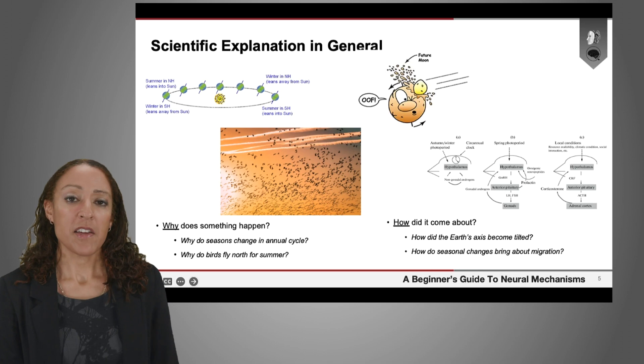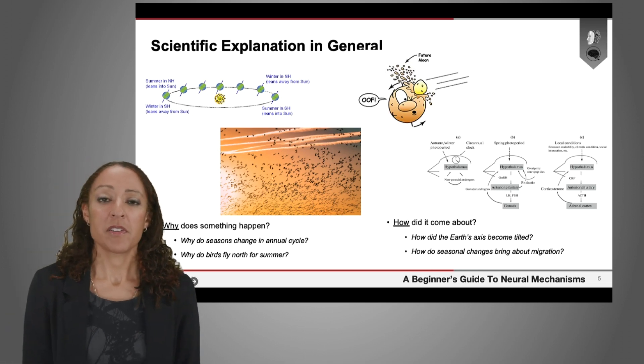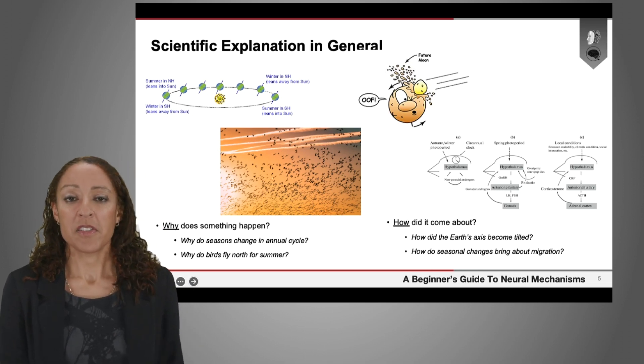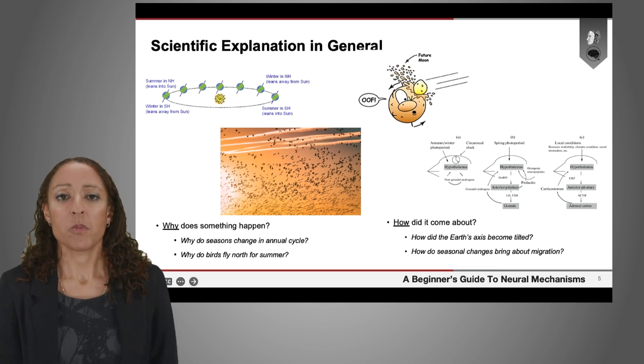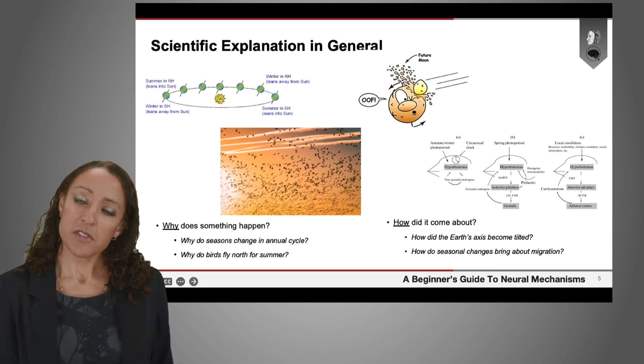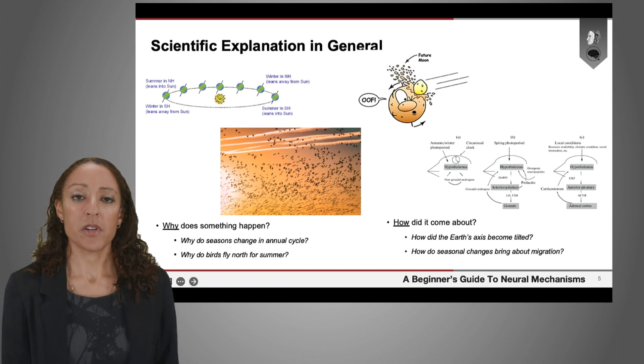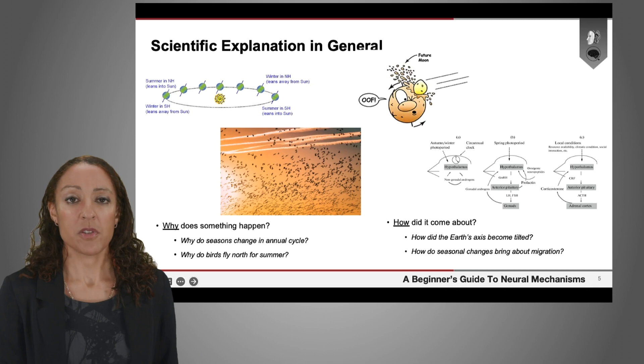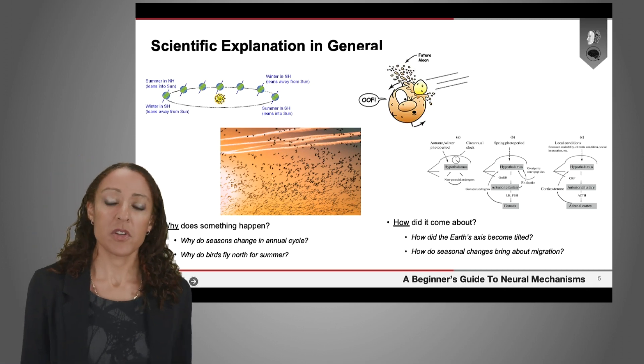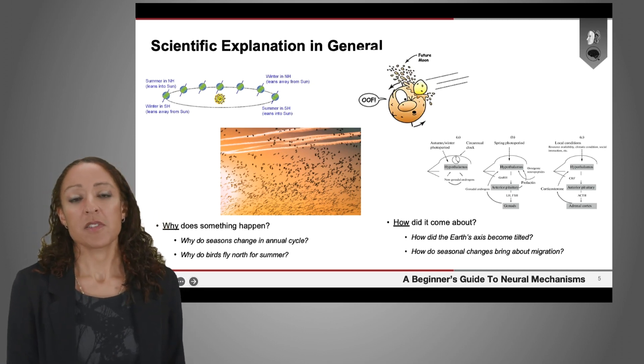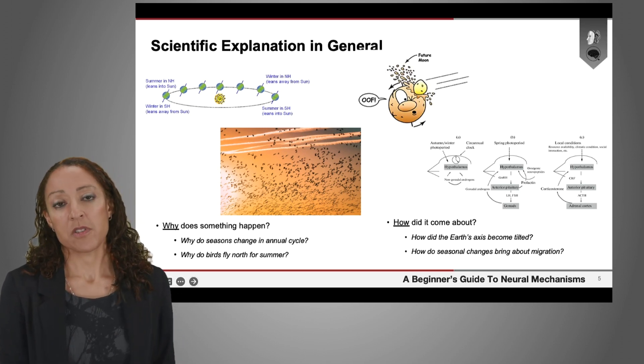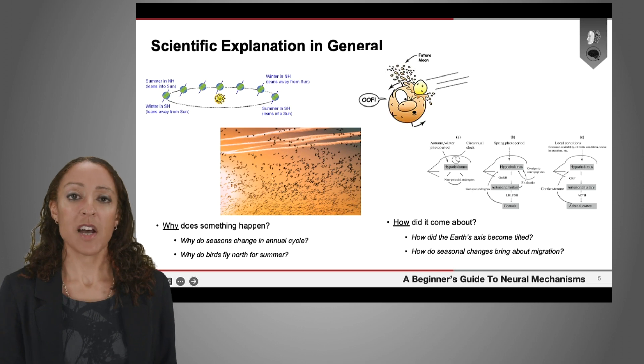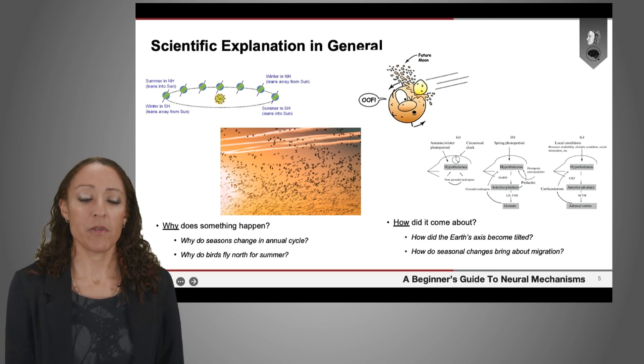If you're thinking about an explanation in the world around us today in the living world, you could think about the migration of birds and ask, why does this happen? And in this case, when we're talking about living organisms which have adapted to their environmental conditions and need to do certain things in order to survive, then in those cases, we can answer those why questions by looking at the function or adaptiveness of certain patterns of behaviour.